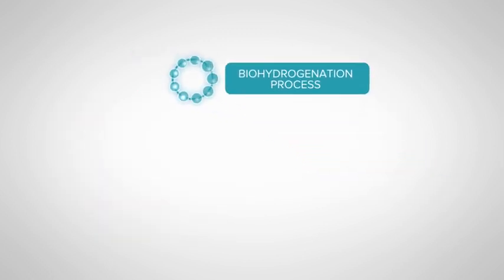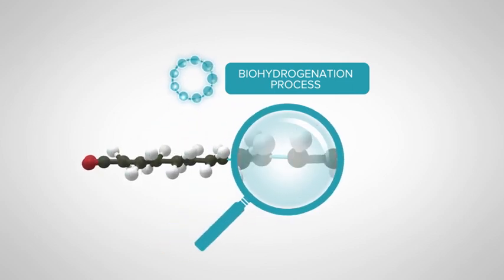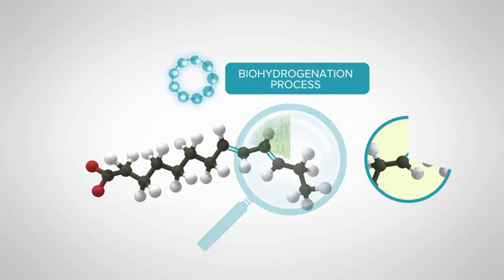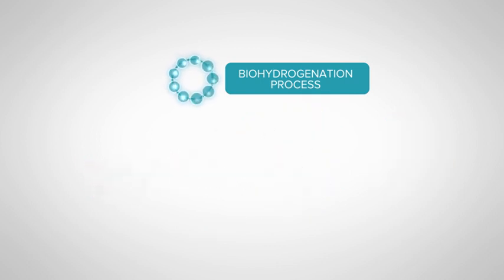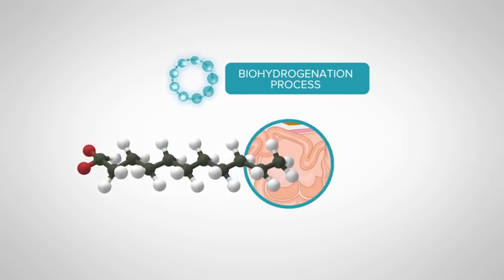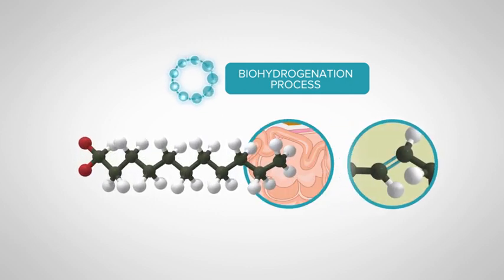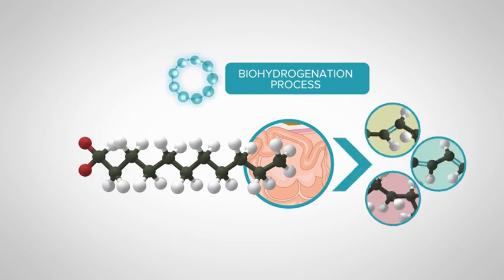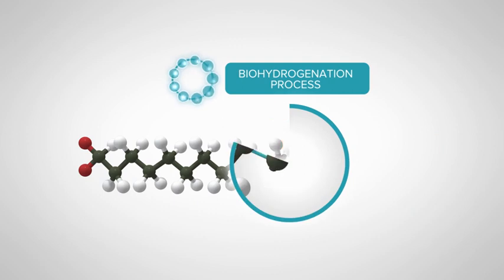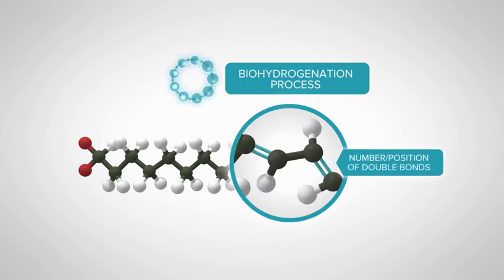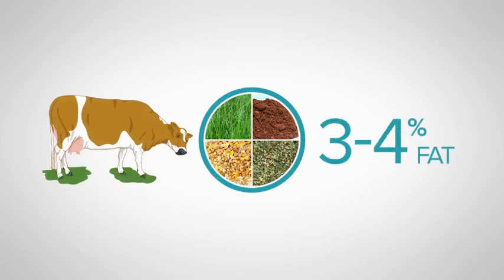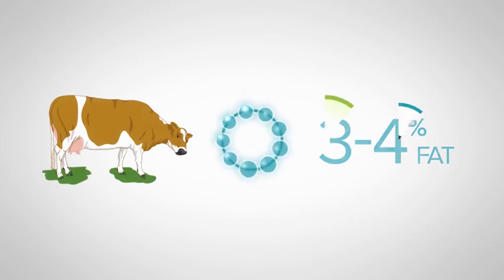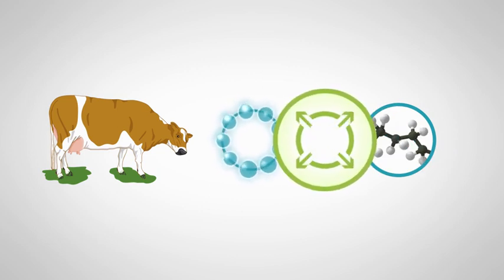Due to this biohydrogenation process, the profile of fatty acids that leave the rumen is very different from what was in the diet. Although the majority of unsaturated fatty acids that are eaten are completely saturated before they leave the rumen, some fatty acids escape during the biohydrogenation process. This depends on the chemical structure of the fatty acid in the diet and the rumen environment. The different fatty acids produced during biohydrogenation can have very different biological effects depending on the number and position of the double bonds remaining. Generally a cow's diet contains about 3 to 4% fat and the biohydrogenation process is able to detoxify the unsaturated fatty acids.